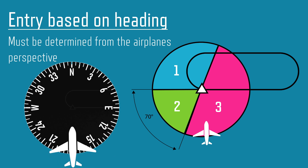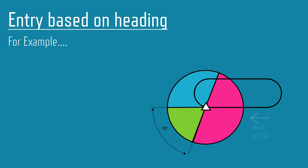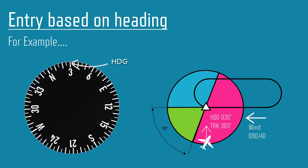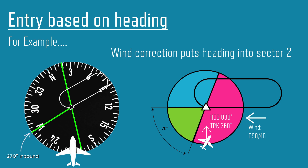When determining which entry to fly, you must consider it from the airplane's perspective — based on heading, not relative position. You can picture the aircraft as flying up from the bottom of the DI or HSI, then superimpose the hold to better understand. For example, consider a strong wind from the east where the aircraft is due south of the holding fix, but making a drift correction eastward to track 360 towards the fix. Its heading places it in Sector 2, offset, where looking at its position alone may lead you to think it is in the direct sector, Sector 3.